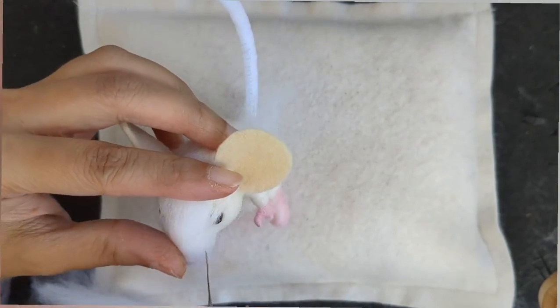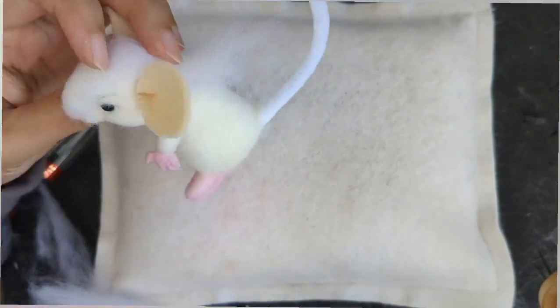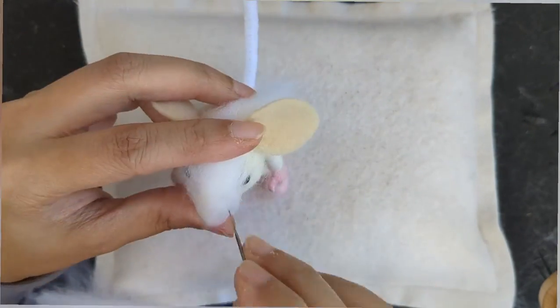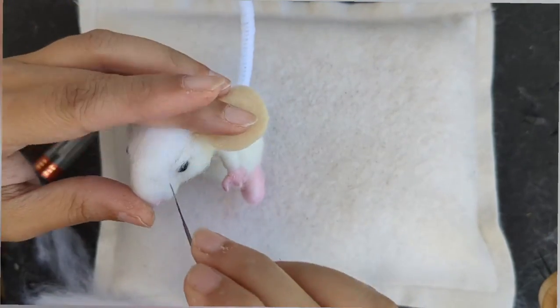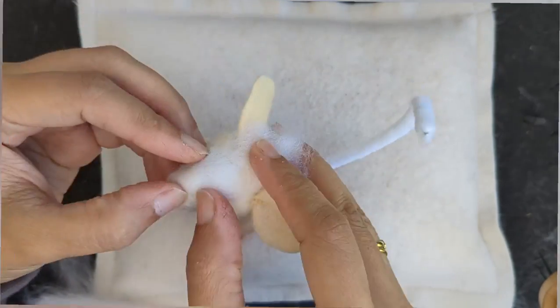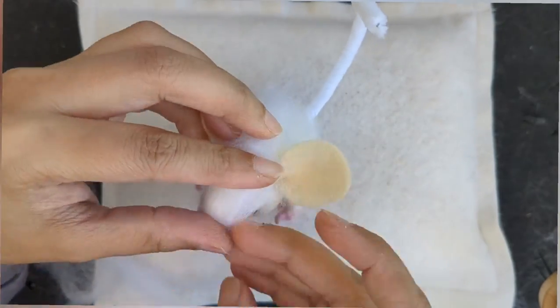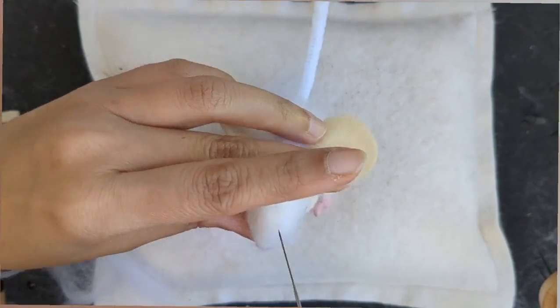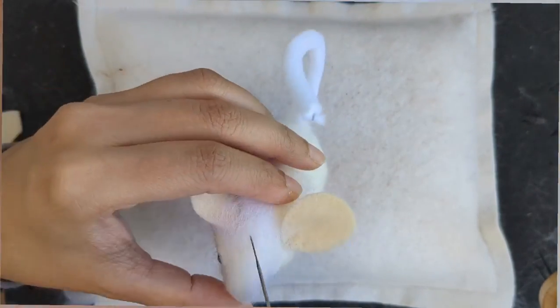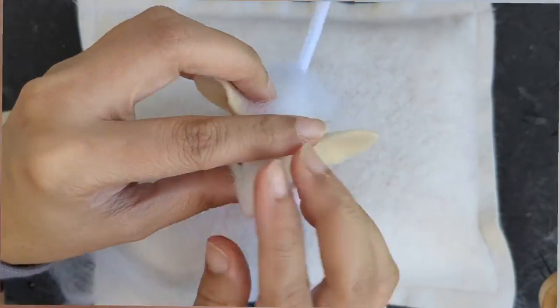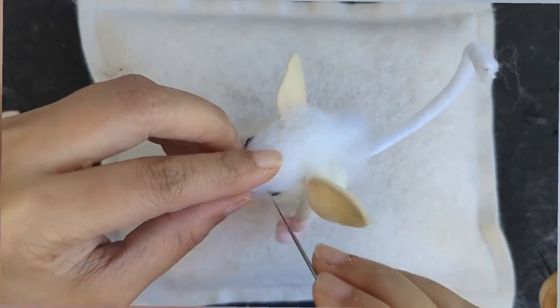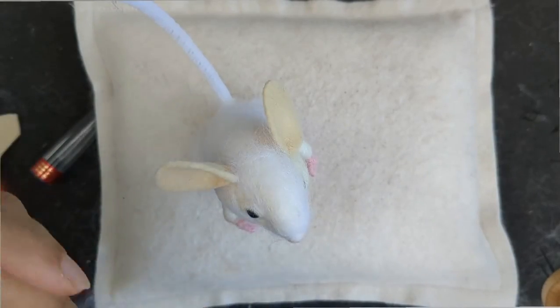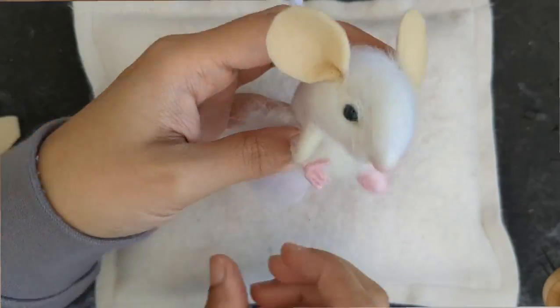So now I'm going to give it color. You can use whatever color you want. I'm making a white mouse so I'm using a white merino top. I'm going to cover the whole mouse with some light wool. Now the whole body is covered.